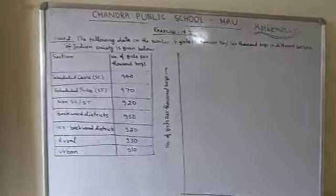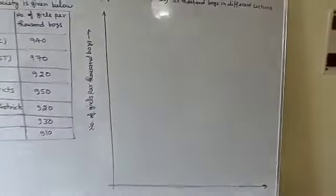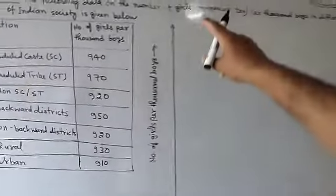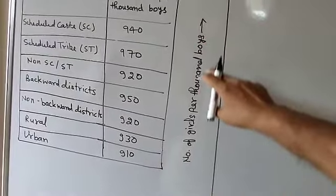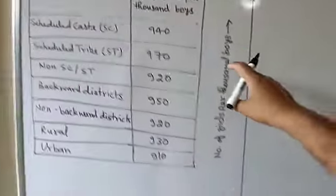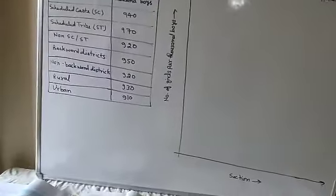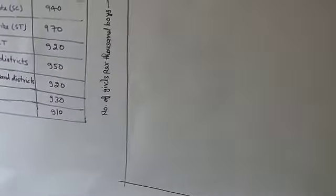The first part of the question asks you to represent the given information on a bar graph. Take a graph sheet and draw the y-axis and x-axis. On the y-axis, represent the number of girls per thousand boys, and on the x-axis, represent the sections.